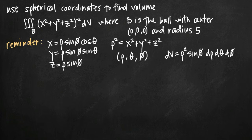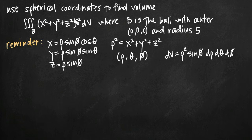Today we're going to be talking about how to use spherical coordinates to find volume. We've been given the triple integral of quantity x squared plus y squared plus z squared, all squared, over the region B, where B is the ball with center at the origin and a radius of 5. Our triple integral is given in Cartesian coordinates, so we need to convert it to spherical coordinates and then find the volume.